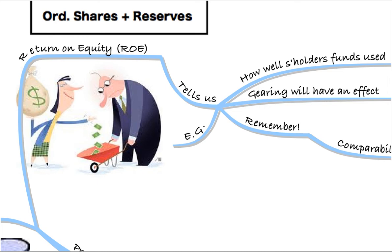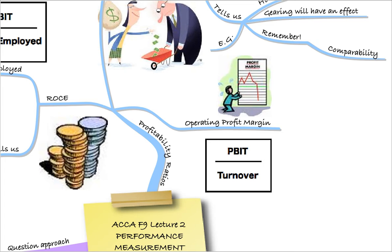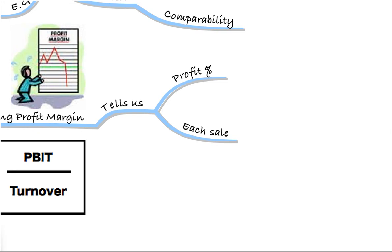Lastly, when it came to profitability, we talked about the profit margins. We did an example using net profit, gross profit, and all of the different profit margins. The operating profit margin is profit before interest and tax over turnover. That's simply telling us what profit percentage we're making on each sale. Very important again to compare year on year.